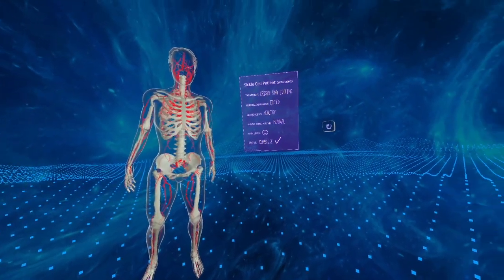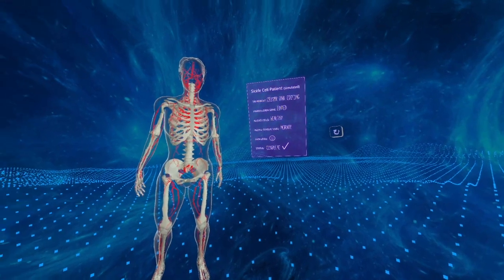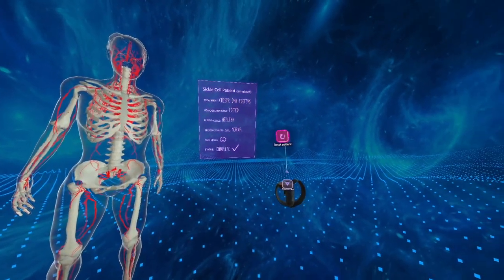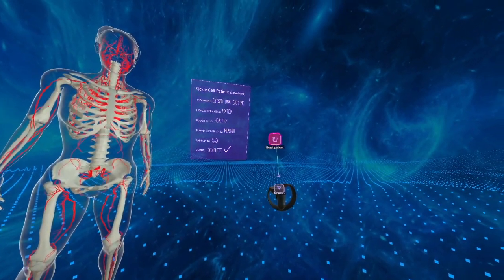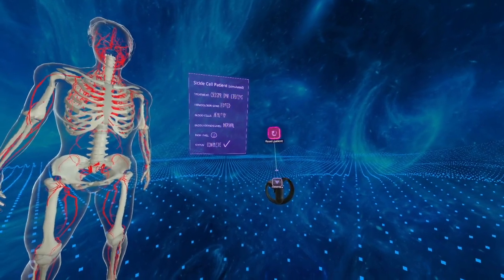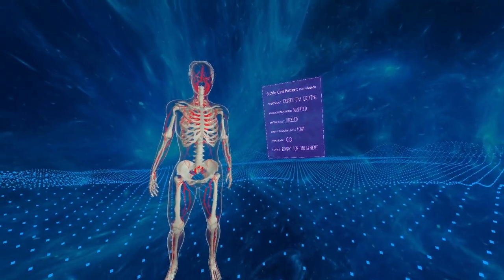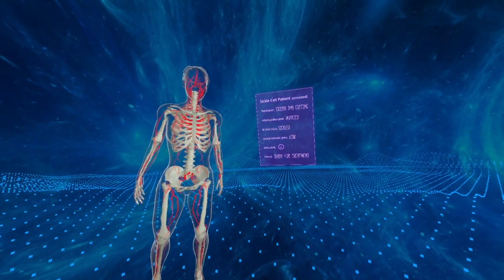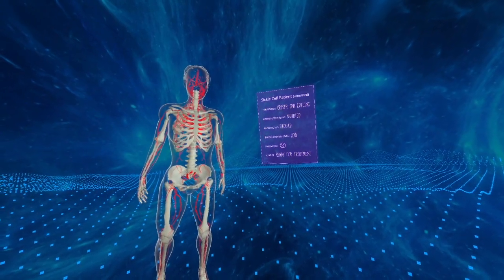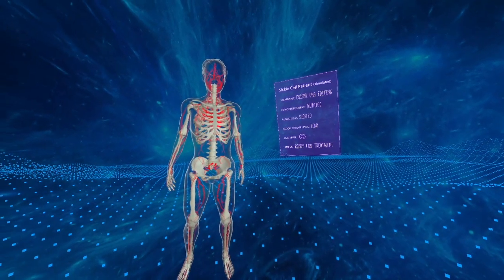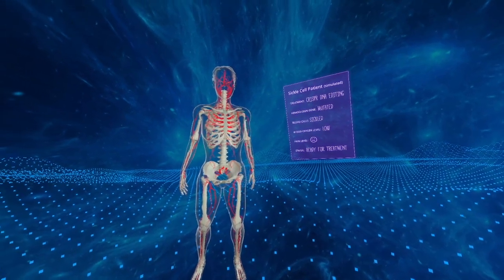If you'd like to try it again or revisit something, you can just point at this little reset patient icon to the right and trigger it with your index finger. That'll replace that patient with a new one who also needs to be gene edited and is ready for your help. That's the end of the walkthrough. Thanks for your interest in CRISPR VR and thank you for watching.